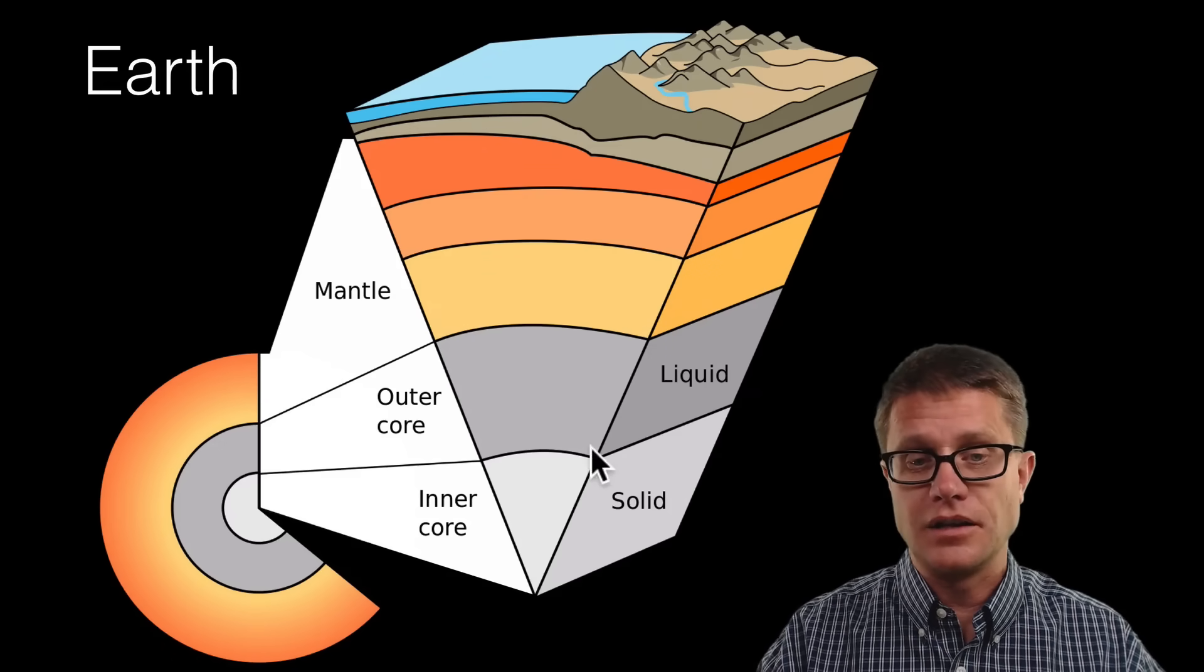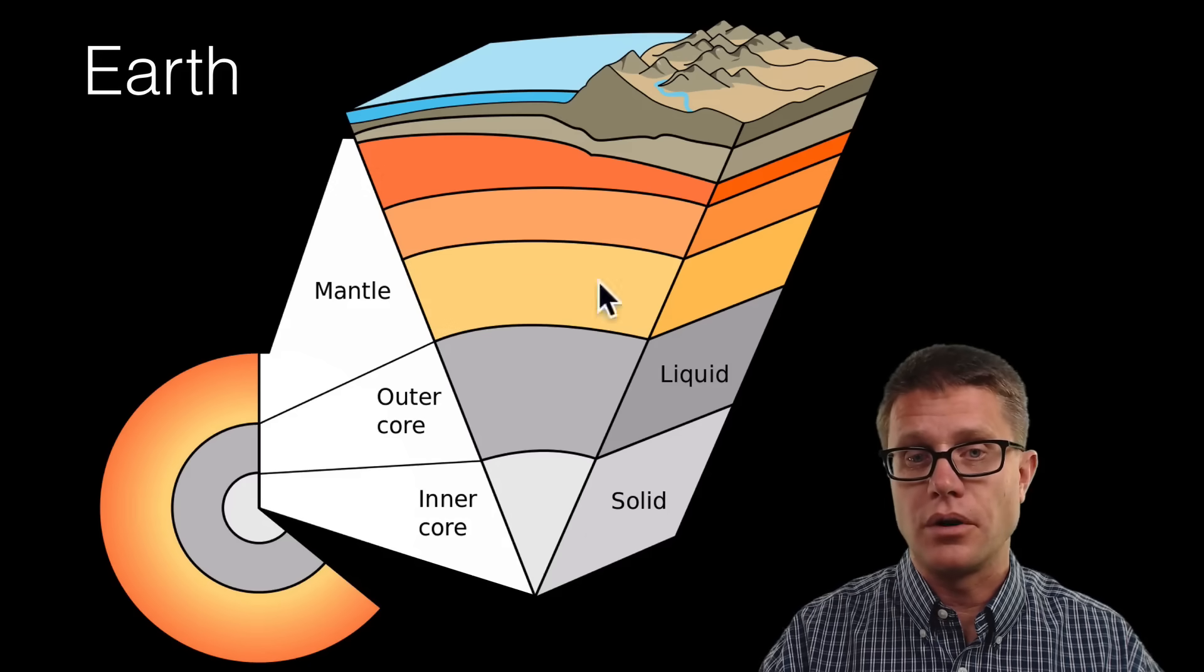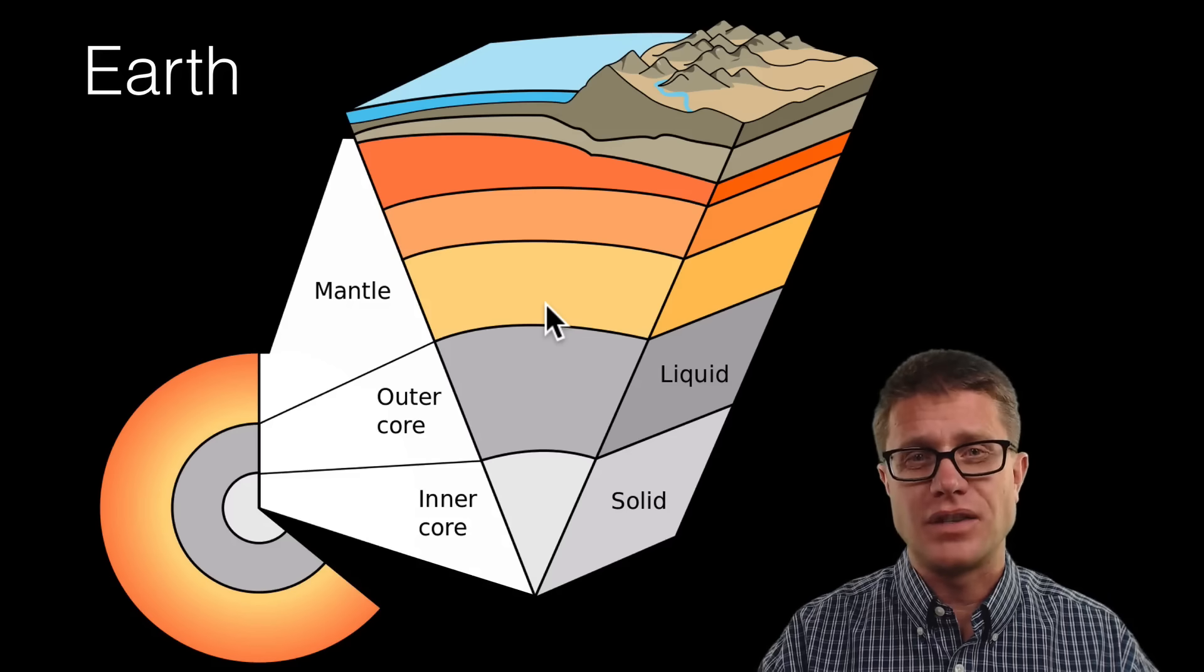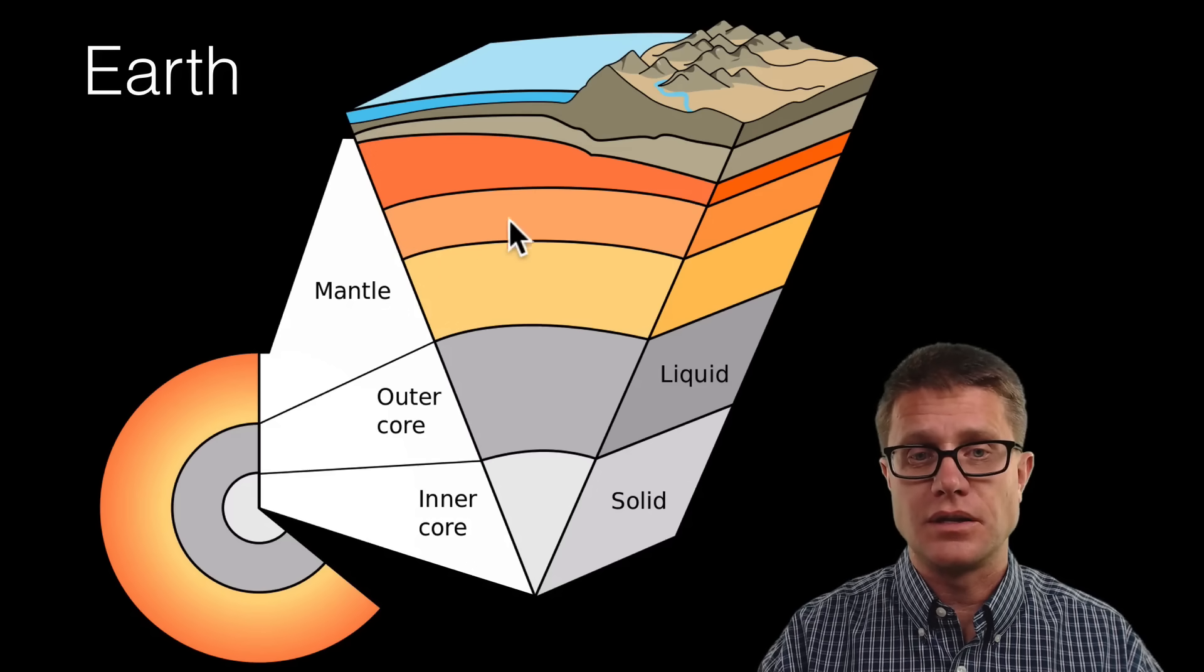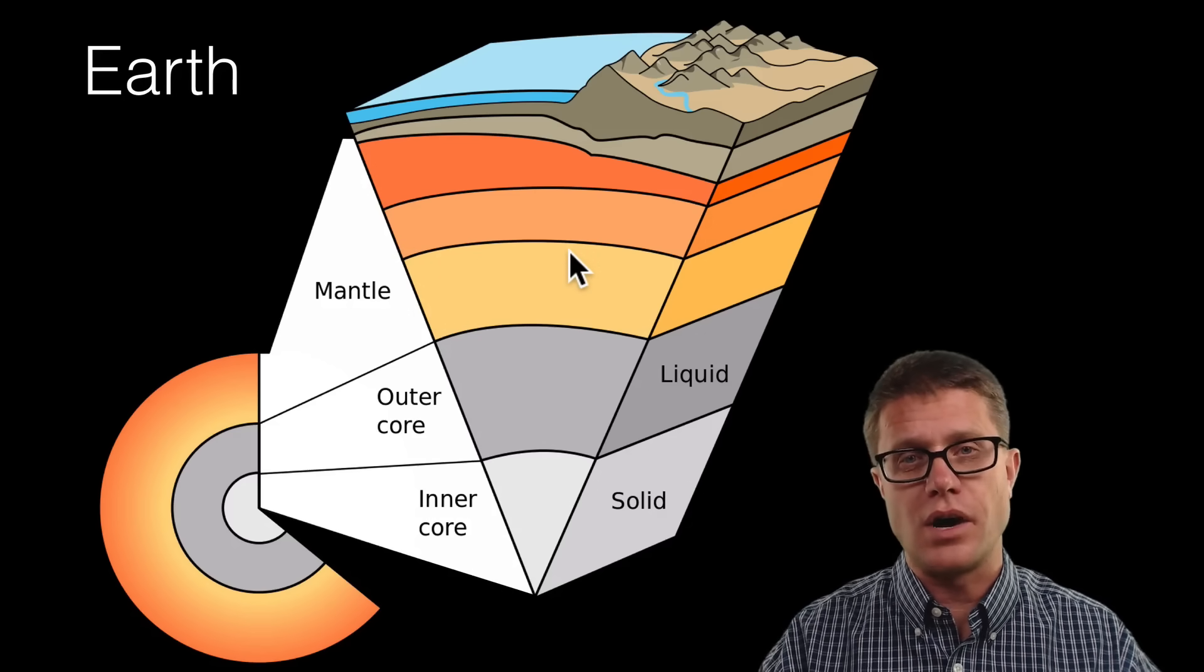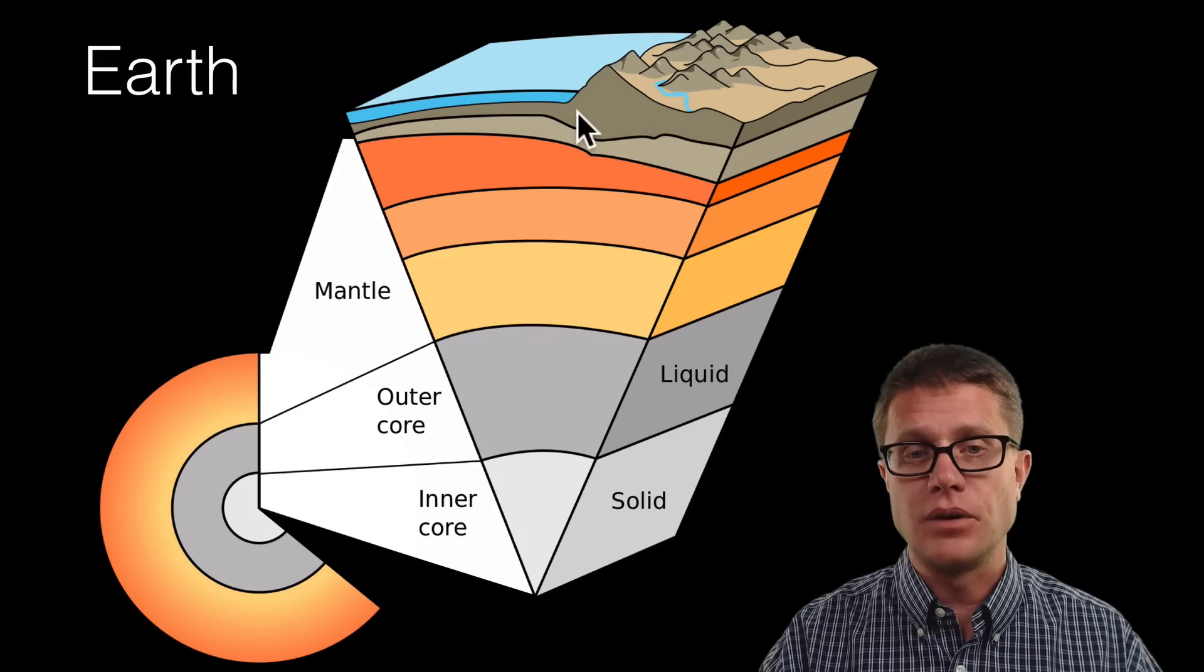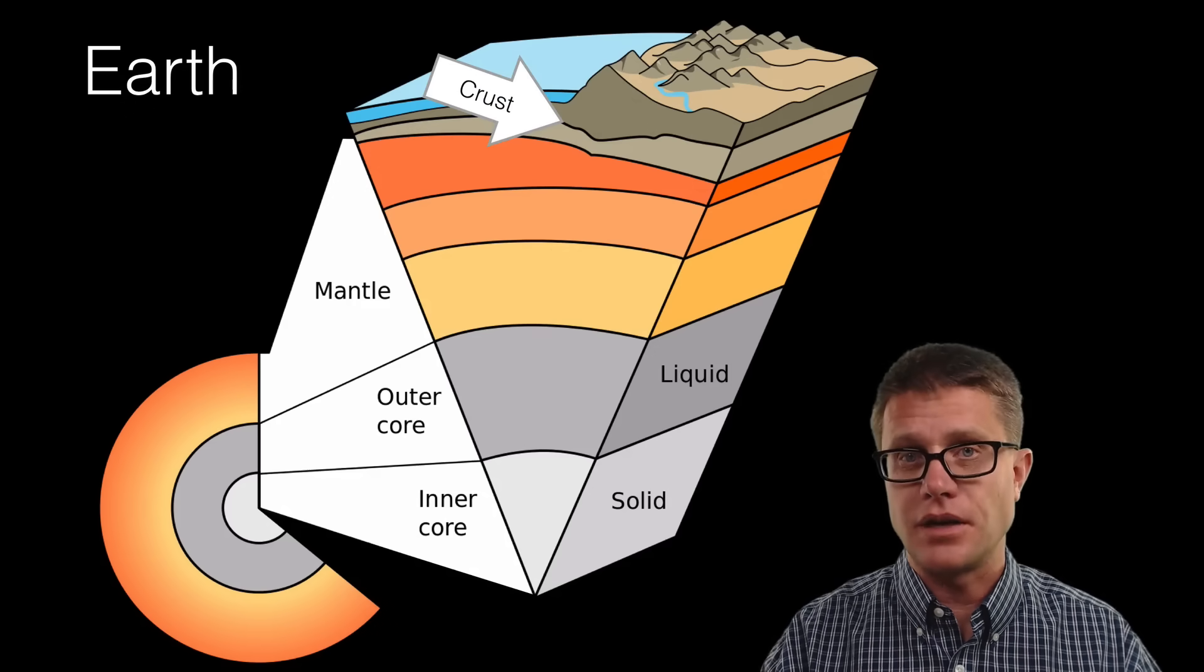So we have got a solid inner core, a liquid outer core, and then we have what is called the mantle. Now around 85 percent of the volume of the earth is going to be in this mantle. So it is rock, but it is rock that is moving. We are generating a huge amount of heat down here. And then we finally get up to what is called the crust. That is where we live.